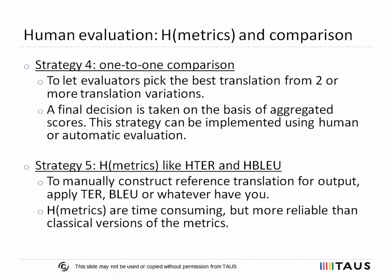The fifth strategy refers to the measure of human-targeted variants of automatic metrics such as HBLEU, HMeteor, or HTerror. These measures are rooted in the paradigm of semi-automatic evaluation metrics for interactive machine translation. Evaluators are asked to manually post-edit the reference with information from the test hypothesis translations, so that differences between a translation and a reference account only for errors. In this case, the final score is not influenced by the effects of synonymy. In general, human-targeted metrics are a time-consuming way of evaluating machine translation quality, but they are considered more reliable than classical versions of automatic metrics.